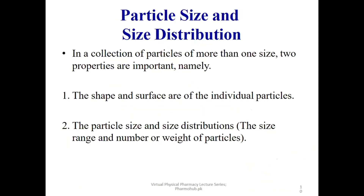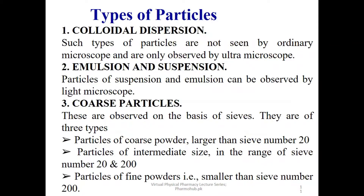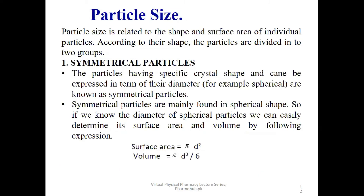Particle size and size distribution tell us about the shape and surface area of individual particles. Types of particles include colloidal dispersions, emulsions, and suspensions. Generally, particles are classified as symmetrical or non-symmetrical. Symmetrical particles have a specific crystal shape and can be expressed in terms of their diameter, so their surface area and volume can be calculated.